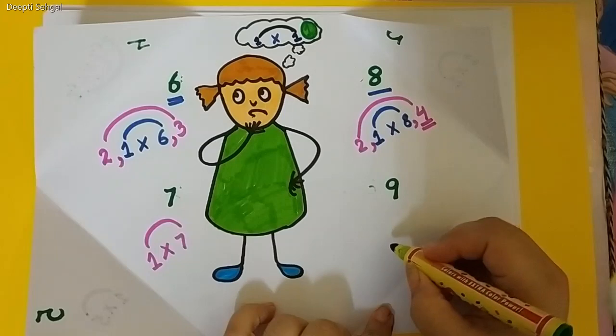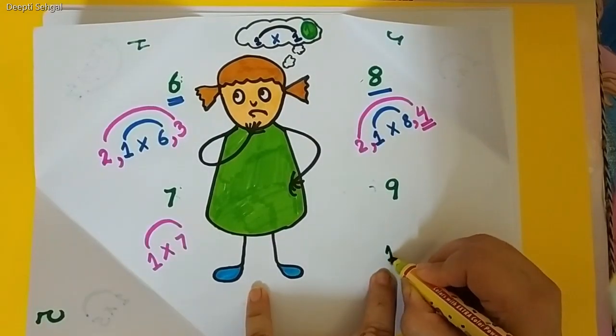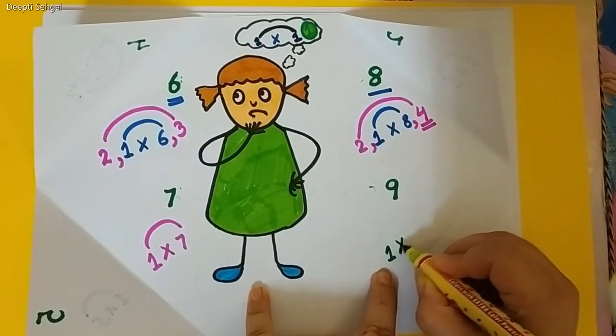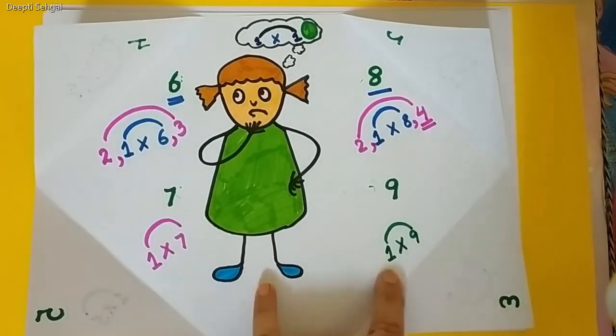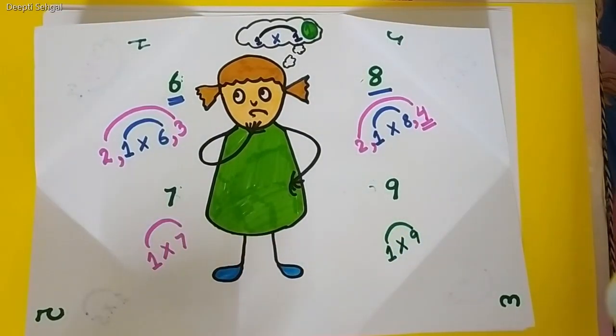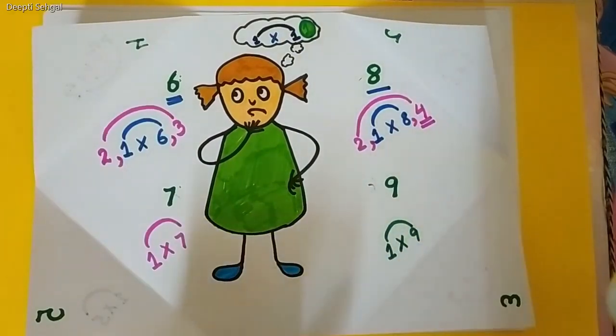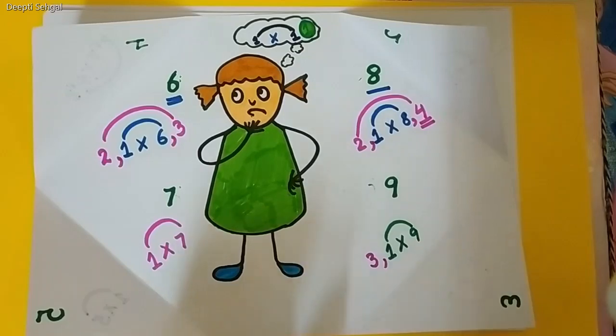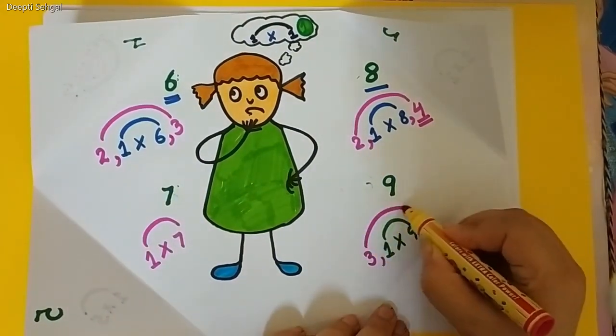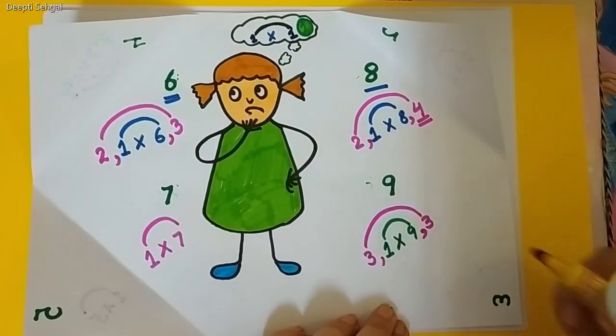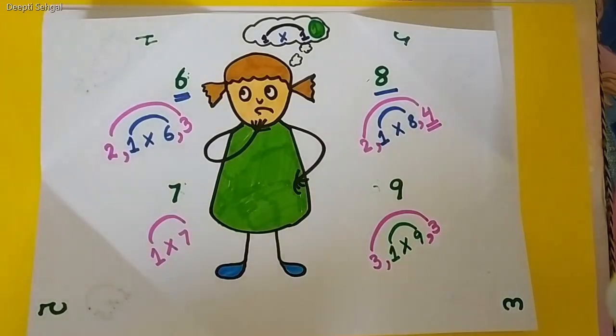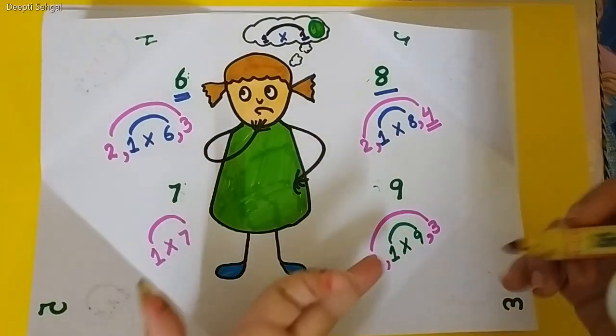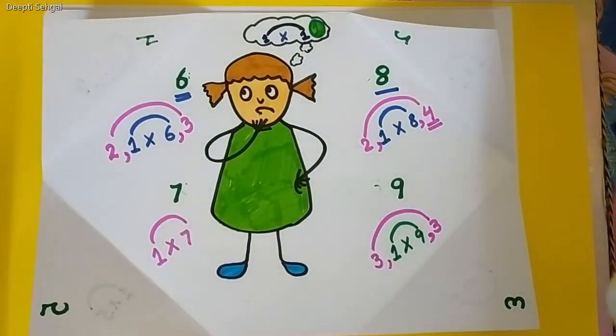And then, Chiku quickly came back and she drew the rainbow in her mind of 9. 1 multiply by 9 is 9. In the table of 2, we do not get 9. So, let's move to the next number that is 3. So, 3 multiply by 3 will give you 9. In any other table does 9 come? No. But, 9 has 2 colors. It is a colorful rainbow. Chiku quickly ran to the ghost and said, The next number is 9.